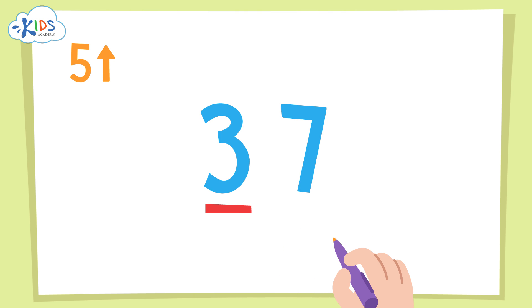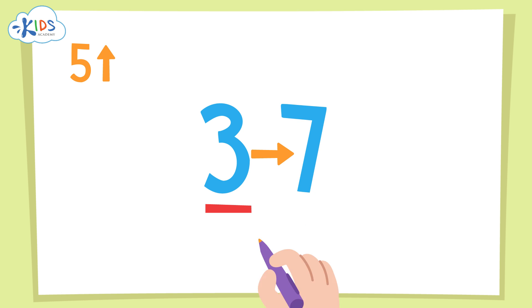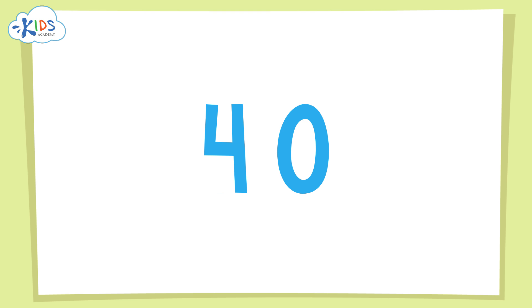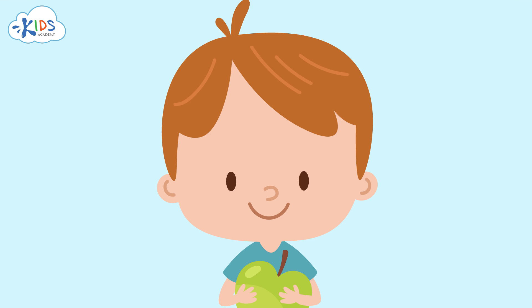But for 37, since we're only rounding to the tens, we have to look at the number in the ones place. Since that number is a seven, we're going to round up, because seven is greater than five. We'll round 37 up to 40. You round the number in the tens place and make the number in the ones place a zero. Let's take a look at a real-life situation that requires rounding and see how our rounding to the nearest ten and hundred skills can come in handy.